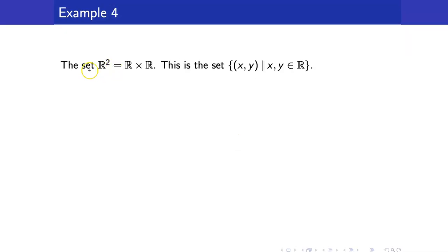You have already encountered the set R². That is just the Cartesian product of the set of real numbers with itself, and the elements are, of course, ordered pairs (x, y) where x and y are just real numbers.